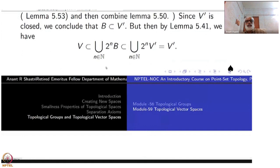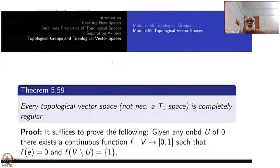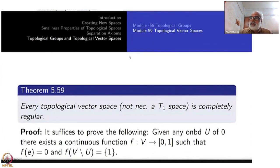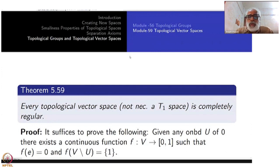Two very important and elegant theorems have been done. The third result is again a curiosity: we have proved that a topological group is a regular space without any further assumption. The question is: what is the best separation property one can say about a topological vector space? The answer is: every topological vector space is completely regular.